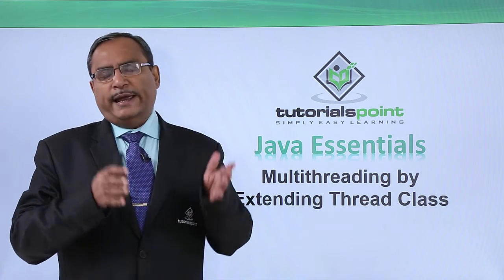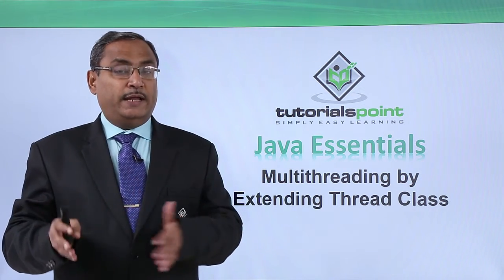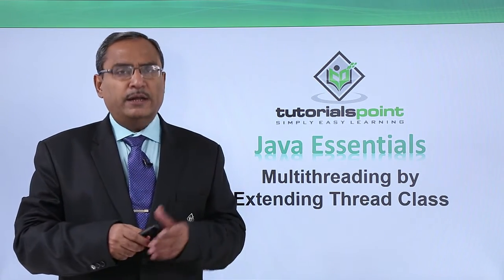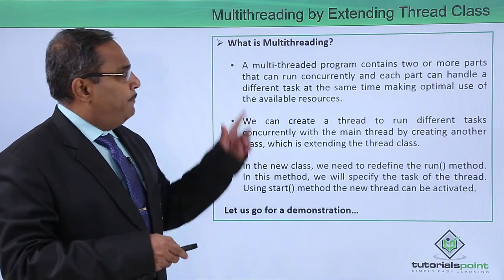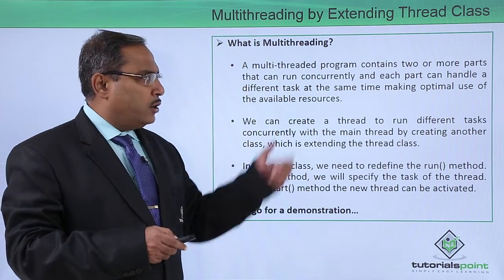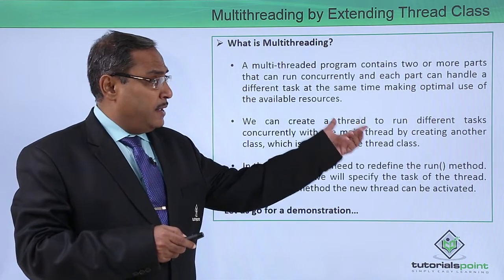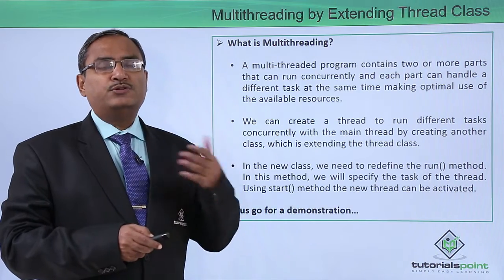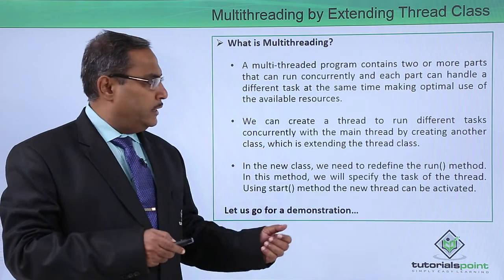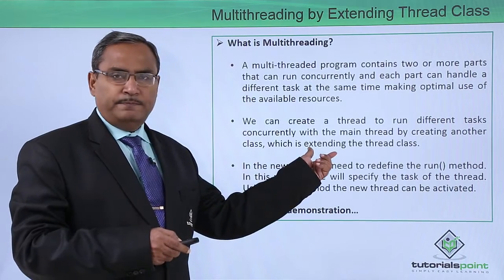A thread can be created by extending the Thread class. Whenever one class extends the Thread class, a thread will be generated. A multi-threaded program contains two or more parts that can run concurrently, and each part can handle different tasks at the same time, making optimal use of the available resources. We can create a thread to run different tasks concurrently with the main thread by creating another class which extends the Thread class.